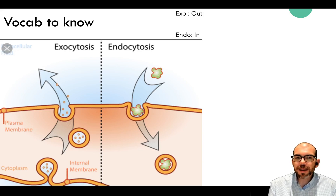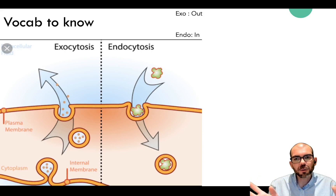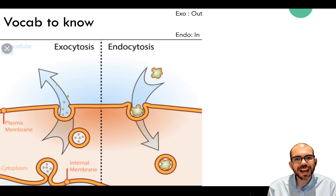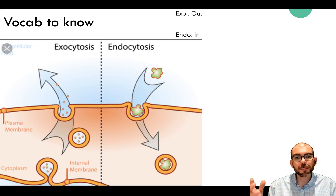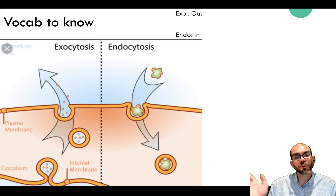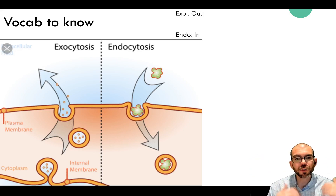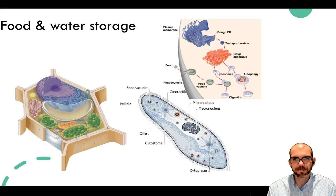Some vocabulary to know: anytime particles fuse with the cell membrane and leave the cell, we refer to that as exocytosis—'exo' means out, 'cytosis' means cell. If a particle is so large that cell membrane has to wrap around it and bring it inward, we refer to that as endocytosis—'endo' means in.